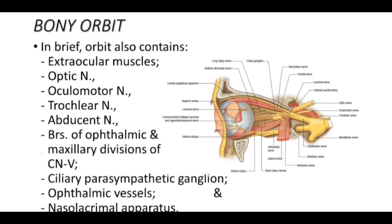Now, the nasolacrimal apparatus — this is the lacrimal gland along with its ducts. All these structures are lying inside the orbital cavity.